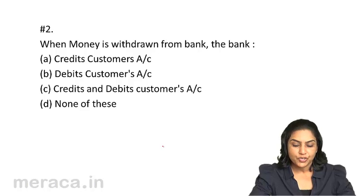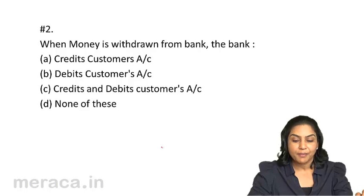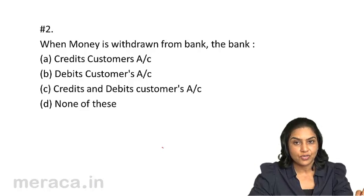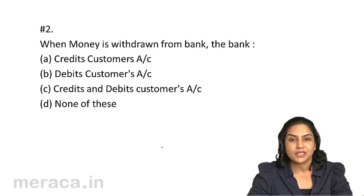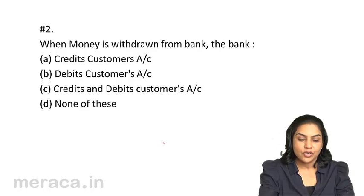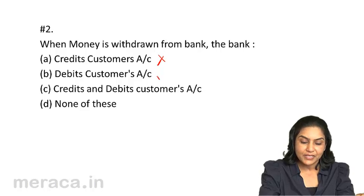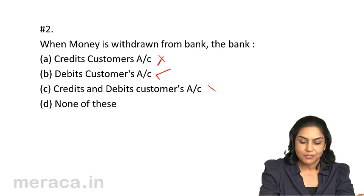Question 2: When money is withdrawn from the bank, does the bank credit the customer's account? As far as we understand, when money is withdrawn from the bank, the bank debits the customer's account. When money is deposited, the bank credits the account — so the 'credits' option is wrong. The option that says it debits the customer's account appears to be right.